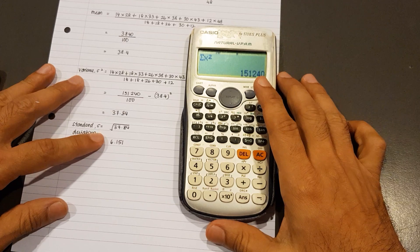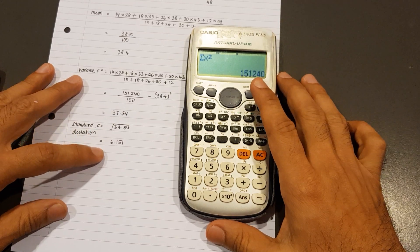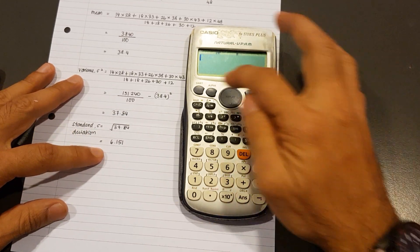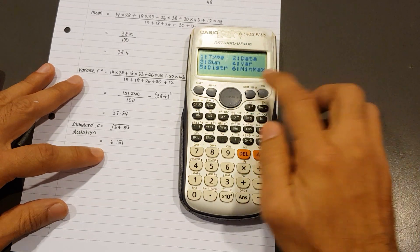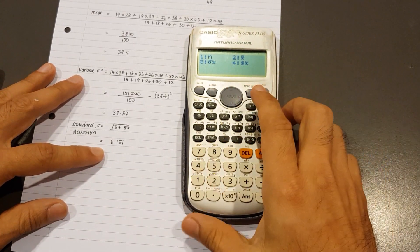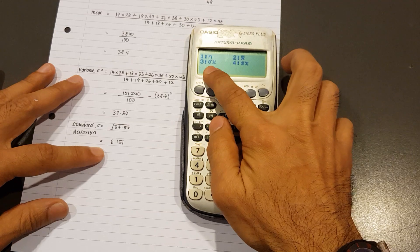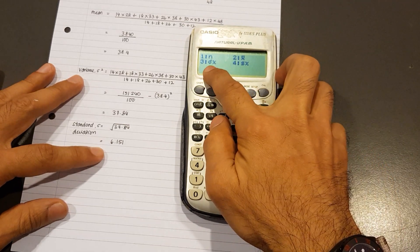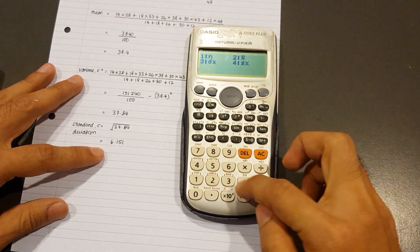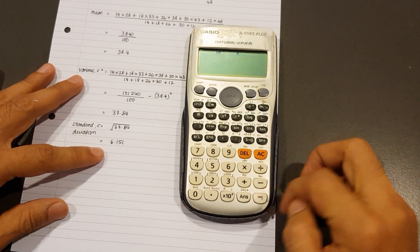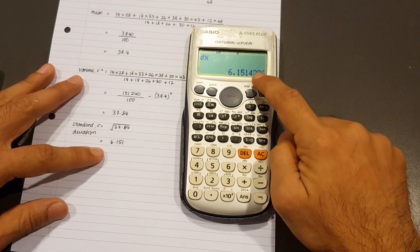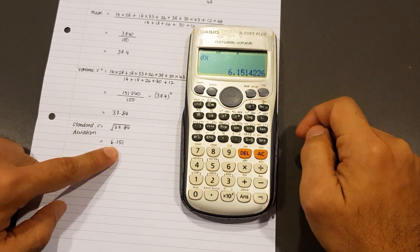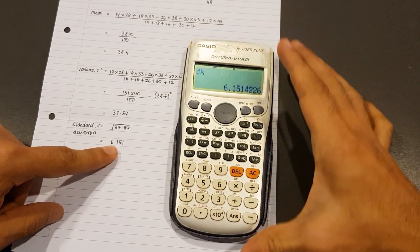Now, what about the answers for the variance and standard deviation? Shift 1, we go to number 4. We're looking at number 3 now - that's the symbol for the standard deviation. If I tap number 3, equals, I get 6.151. That's the standard deviation.